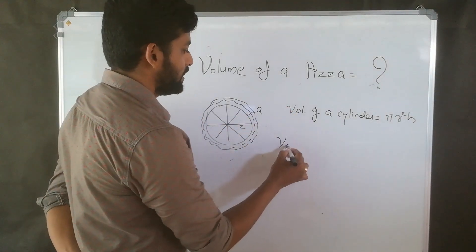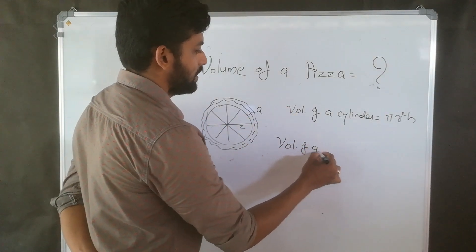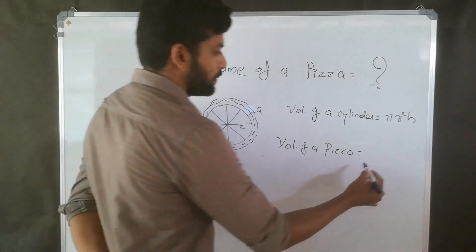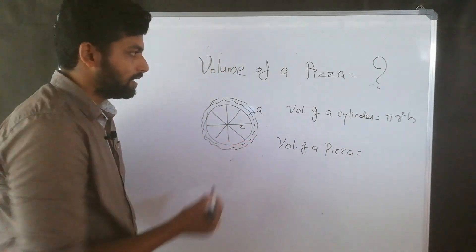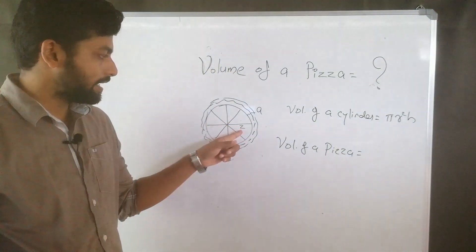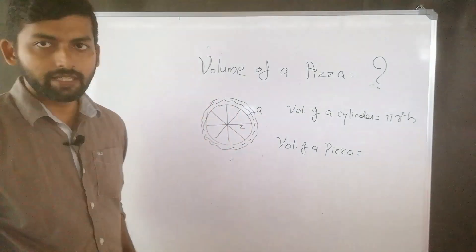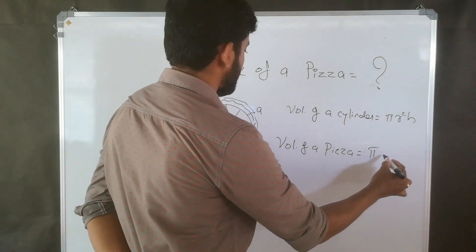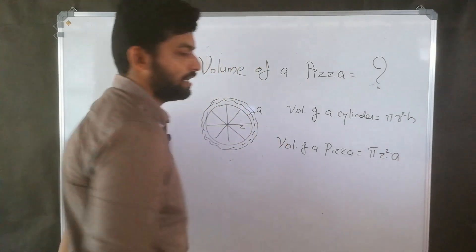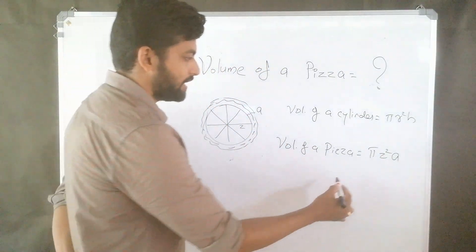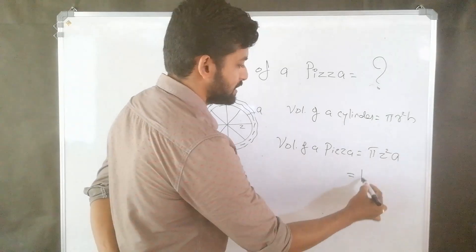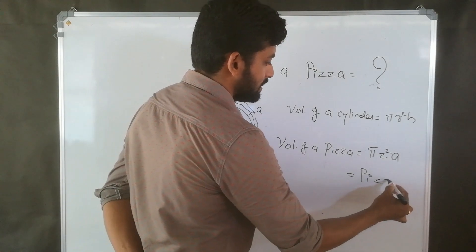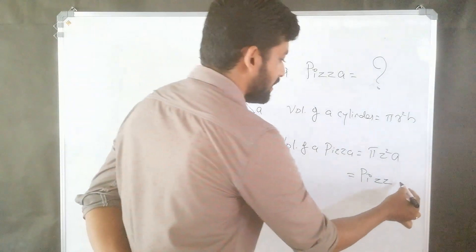Here volume of a pizza, that is equal to the same formula we can use, but here instead of radius r, radius is z and height is a. So here we can write pi z square a, and that also we can write here pi, that is pi we can write and z square that is z z and then a.